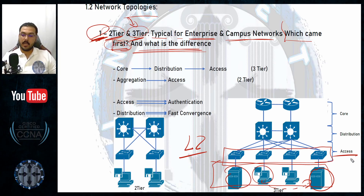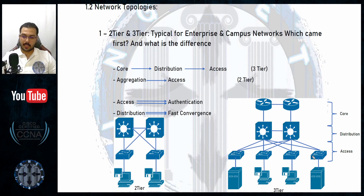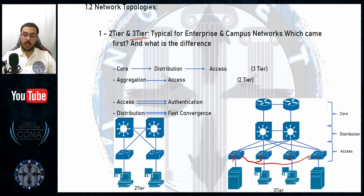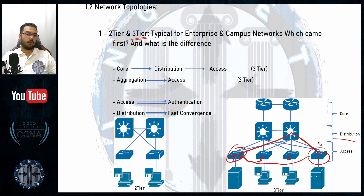In the access layer you find classic layer 2 switches. Your switch connects you and passes traffic to another switch that connects to the destination. However, there is no direct cable between the access switches you see. Based on the three-tier topology, in order for one switch to reach another, it must pass through a layer 3 device — like a multi-layer switch. That is called the distribution layer.